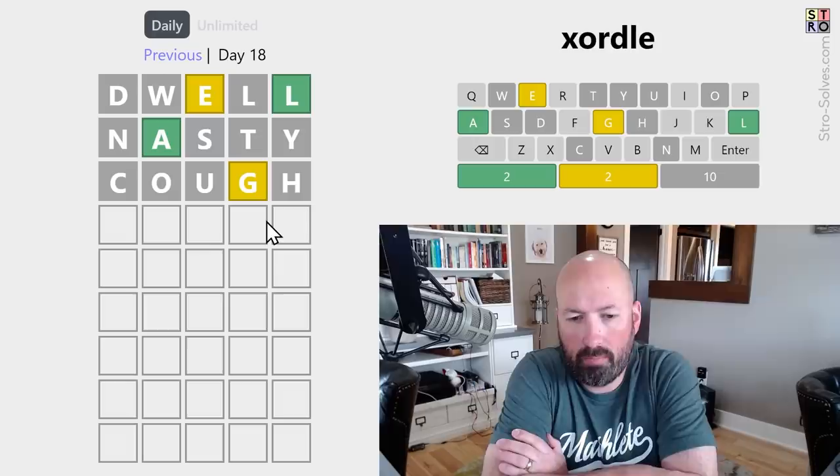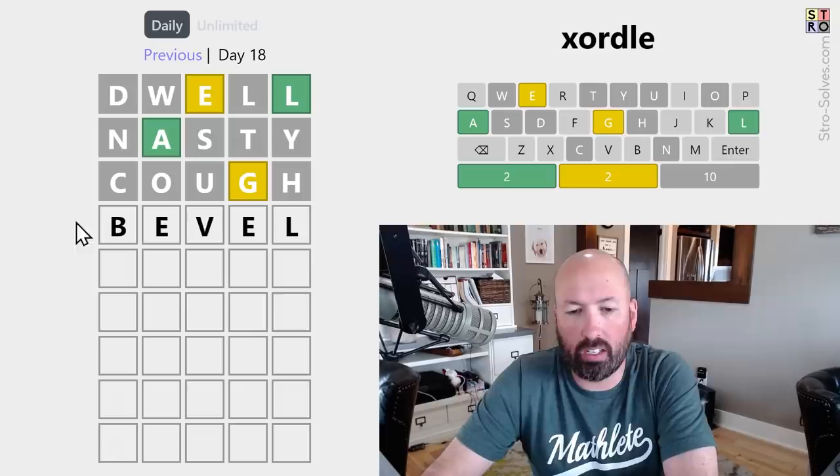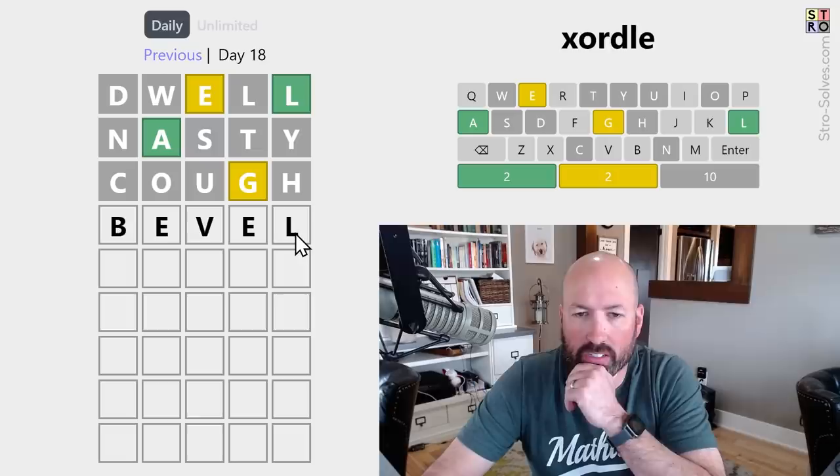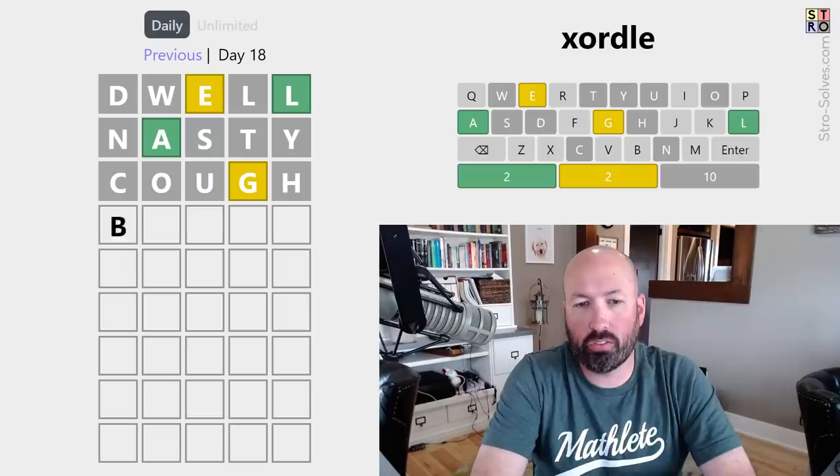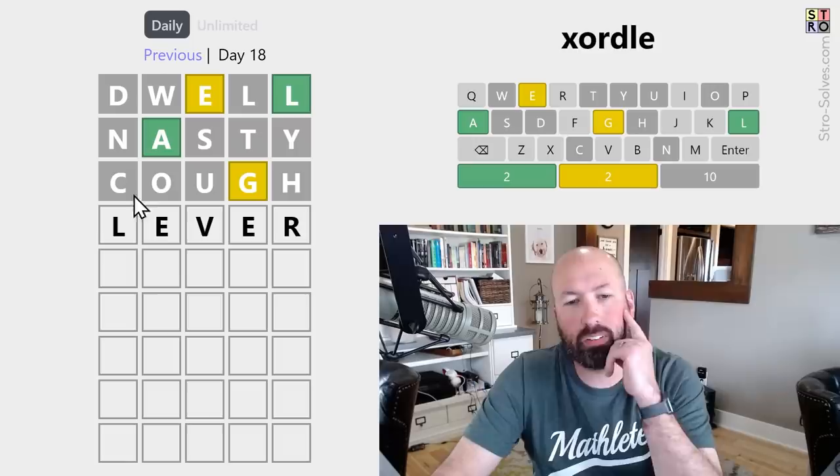Something like Bevel might be good because it checks two new spots for the E. We haven't done B or V. We know there's an L at the end, though. So, that doesn't get us any new information, unfortunately. We could also do something like Pixel. But again, we already know the L at the end. All right. Lever will be good. Instead of Bevel, Lever. Because, well, but then the L. We already know there's a green.